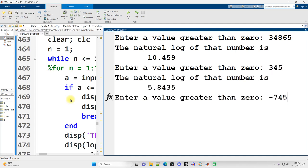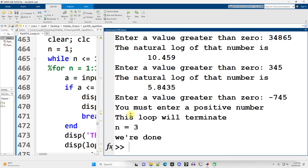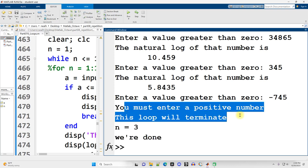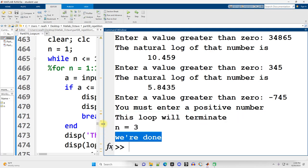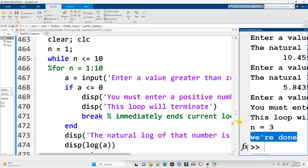And then I say, no, I'm going to enter a negative number. And hit enter, and it says, no, no, no. You must enter a positive number. This loop will terminate. n equals 3, and we're done. So we see that the loop stops running.